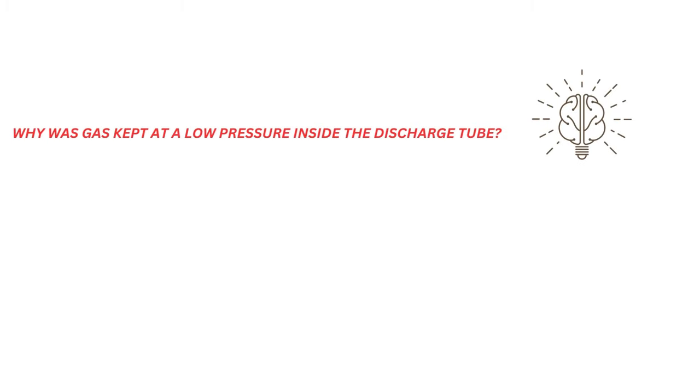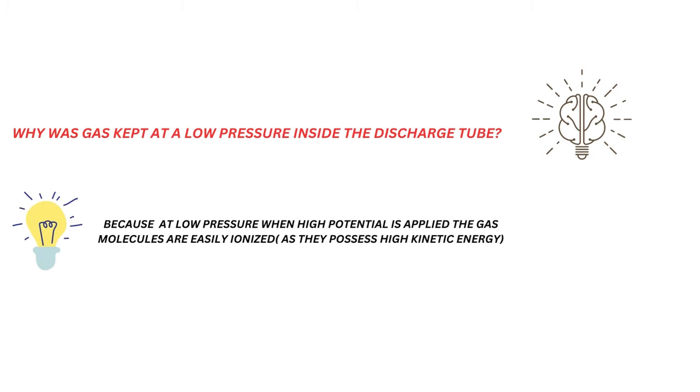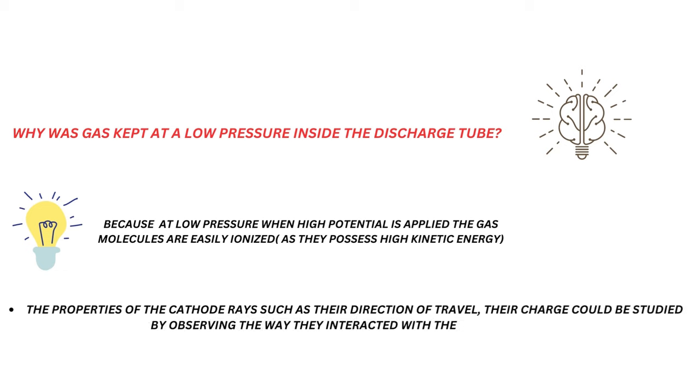Now there might be a question coming in your mind: Why was gas kept at low pressure? The answer is simple. At low pressure, when high potential is applied, the air molecules are easily ionized. Moreover, the properties of the cathode rays, such as their direction of travel and their charge, could be studied by observing the way they interacted with the gas molecules.